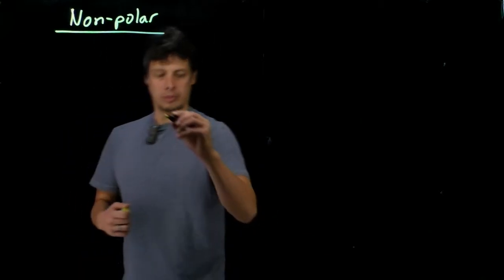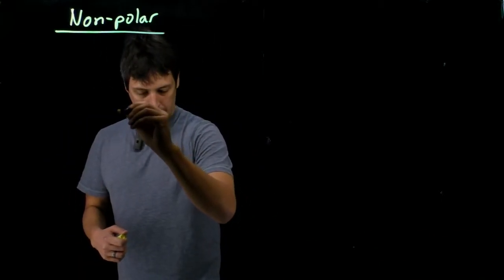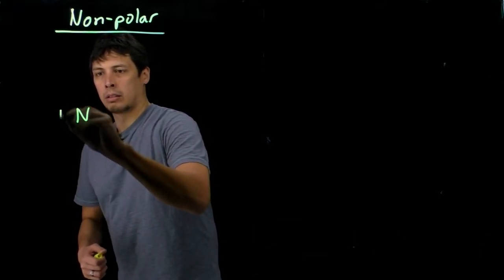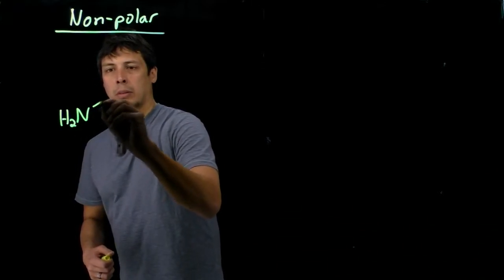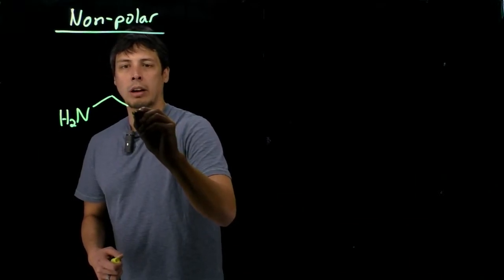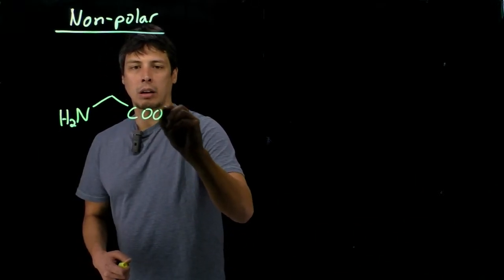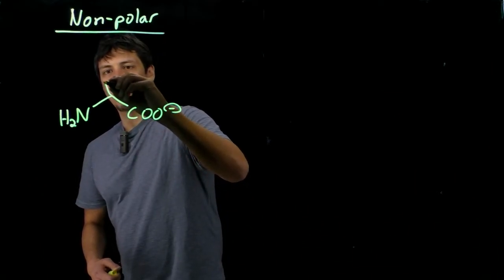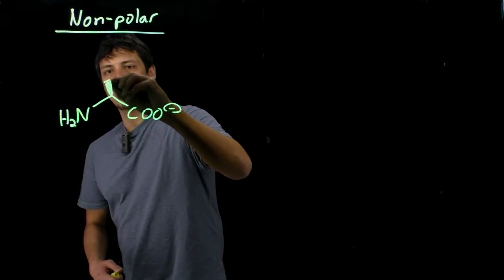So we're going to look at some of the aromatic amino acids now. So again, just like we start most of our amino acids, we've got our alpha amine, our alpha carboxylate, we have our wedge to indicate our stereochemistry.